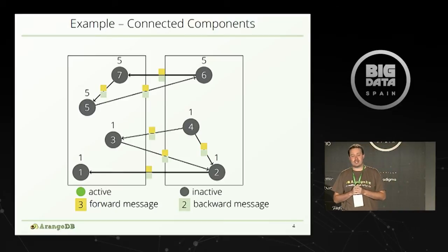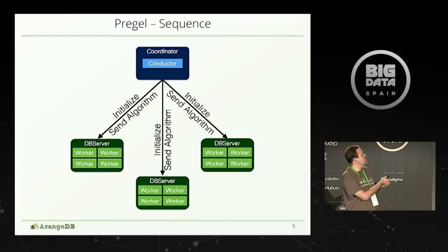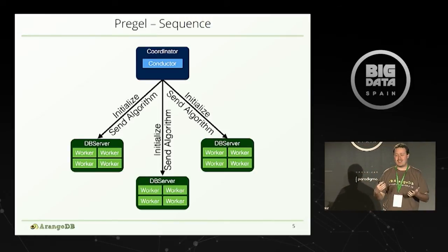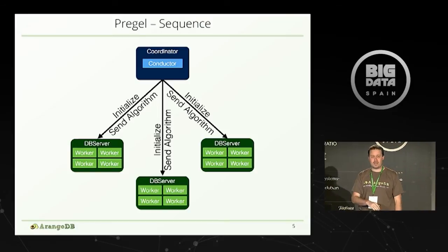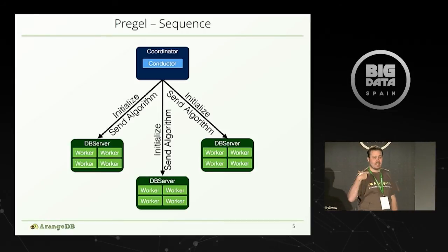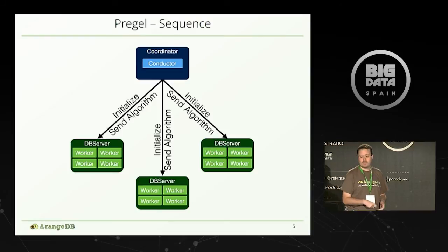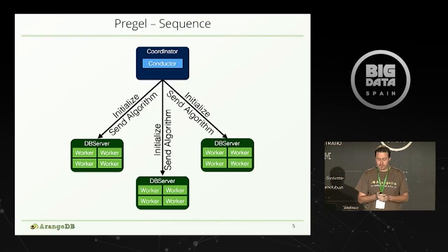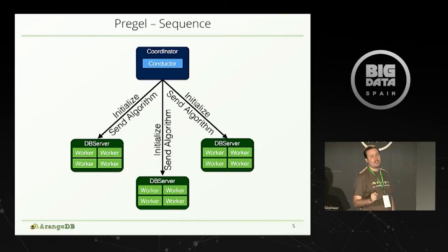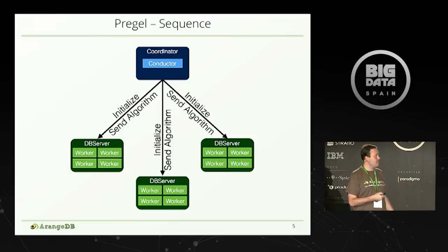How is that done in an architectural overview? There are two components of a Pregel setup. The first is a conductor — called the master in the original paper, but we renamed it to avoid confusion. The workers are located at the data on the database servers, while the conductor can be on the same or a different server. The conductor is what the user interacts with: the user tells the conductor which algorithm to execute on which data set. The user doesn't need to know anything about the workers.